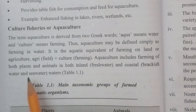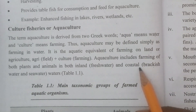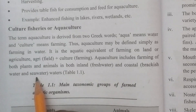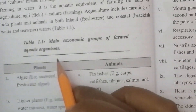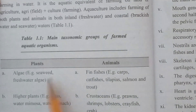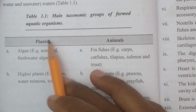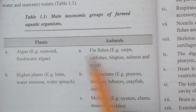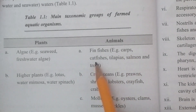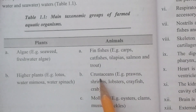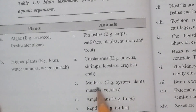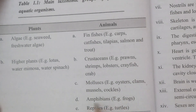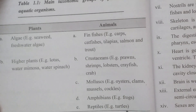Aquaculture includes farming of both plants and animals in both inland freshwater and coastal environments — that is, brackish water and sea water. Farmed aquatic organisms include plants such as algae and higher plants; finfish such as carp, catfish, tilapia, salmon, and trout; crustaceans such as prawn, shrimp, lobsters, crayfish, and crab; mollusks such as oysters; amphibians such as frogs; and reptiles such as turtles.